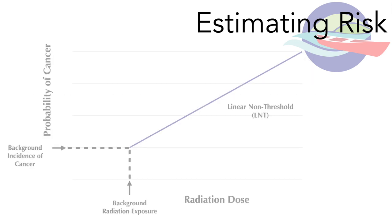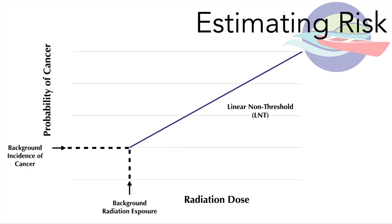Simply put, at no minimal threshold, as your radiation dose increases, so too does your probability of developing cancer. This is called a linear non-threshold model for estimating risk. It assumes that everyone experiences a background incidence of developing a spontaneous cancer, paired with our background radiation exposure. Just simply living on planet Earth exposes us to at least some background radiation — something that we simply can't avoid. We see from this graph that as we move up the radiation dose, we increase our probability of causing DNA and cellular damage proportionately.